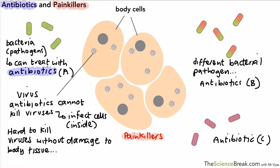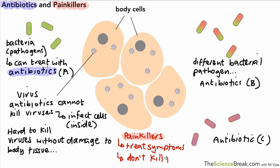What doctors might give instead is a painkiller - such as aspirin, paracetamol, or ibuprofen. Painkillers help to treat the symptoms of the disease. If the symptoms include headache, runny nose, cough, aches and pains, or fever, painkillers relieve those symptoms while your body deals with the pathogens inside. You can take painkillers together with antibiotics so you don't feel the symptoms while your body is getting better.